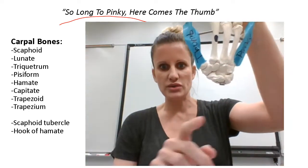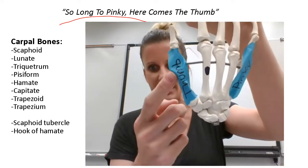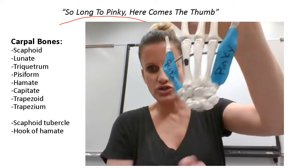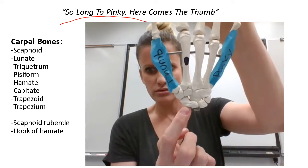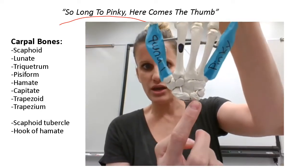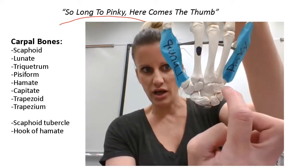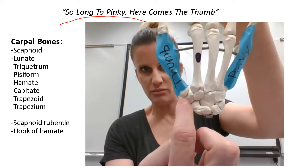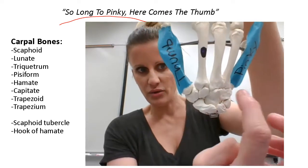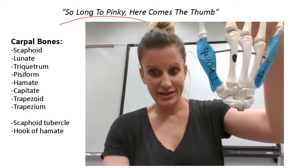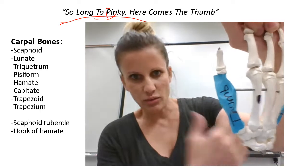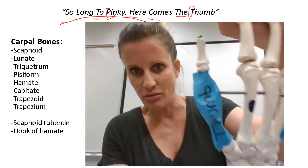Using this saying, we start on the thumb side — this is the thumb side of the hand, and this is the pinky side. We start at the proximal side, closest to the arm, on the thumb side, and head over towards the pinky. Then we work our way back to the thumb. The saying helps: 'So long to pinky' — ending at the pinky — then 'here comes the thumb' — ending at the thumb again.